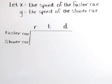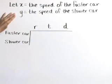We've completed step one, we've read the problem carefully. In step two, let's define our variables. Let x equal the speed of the faster car and y the speed of the slower car.